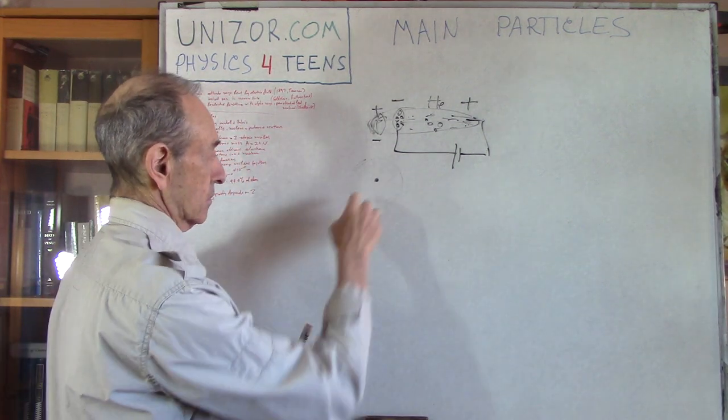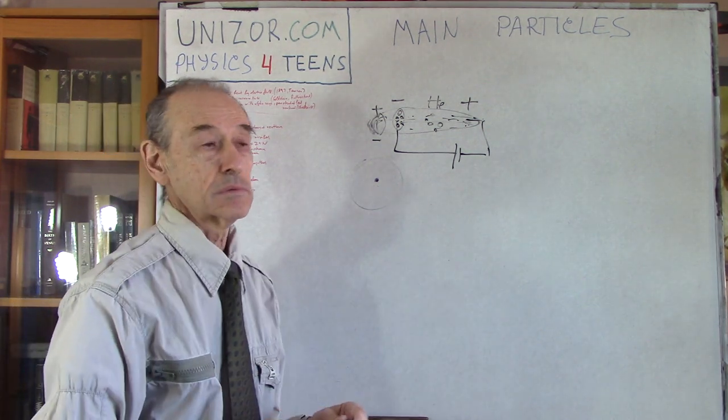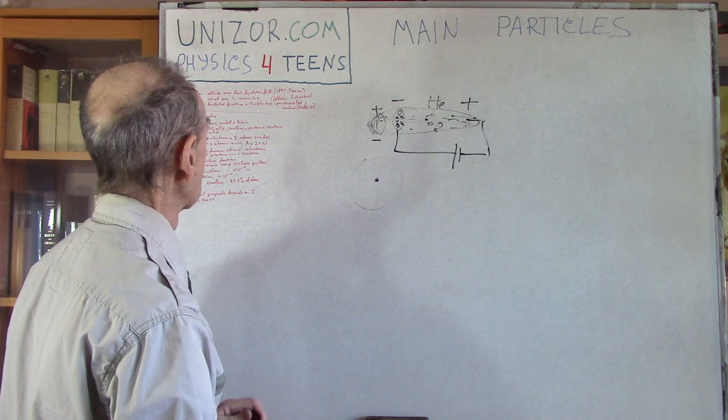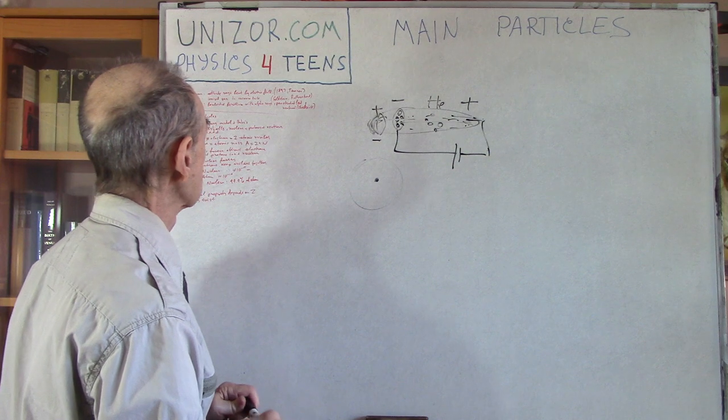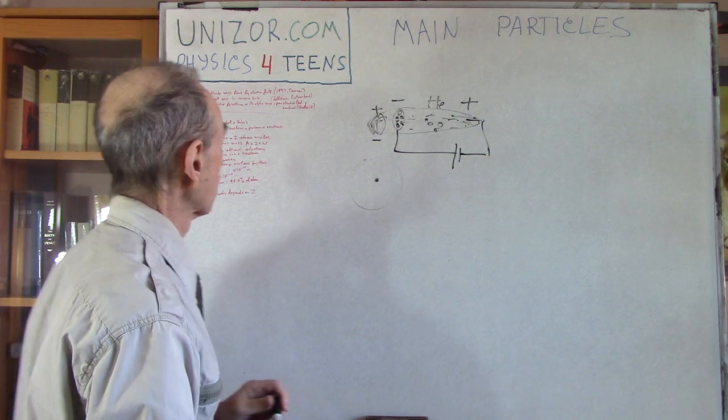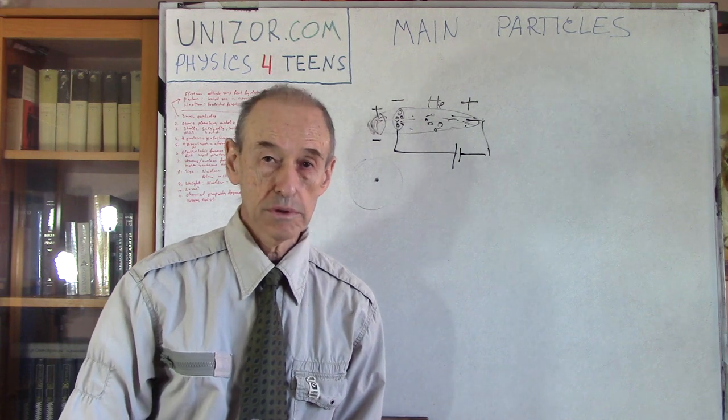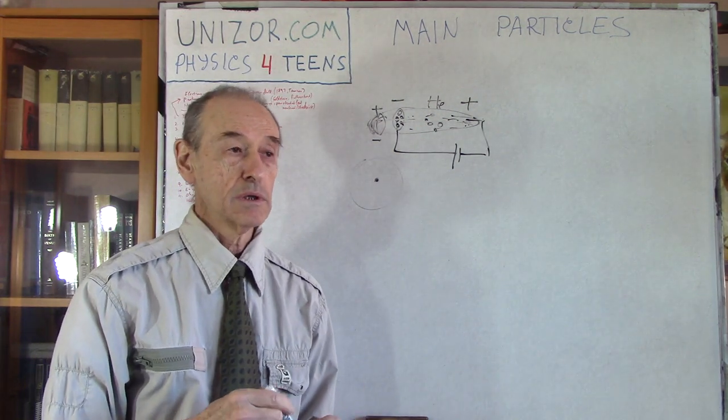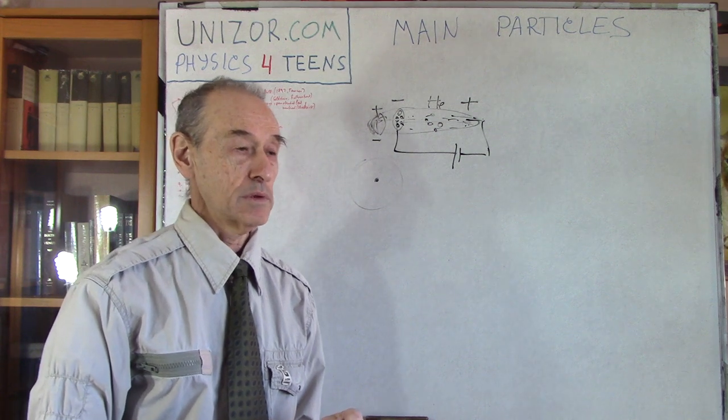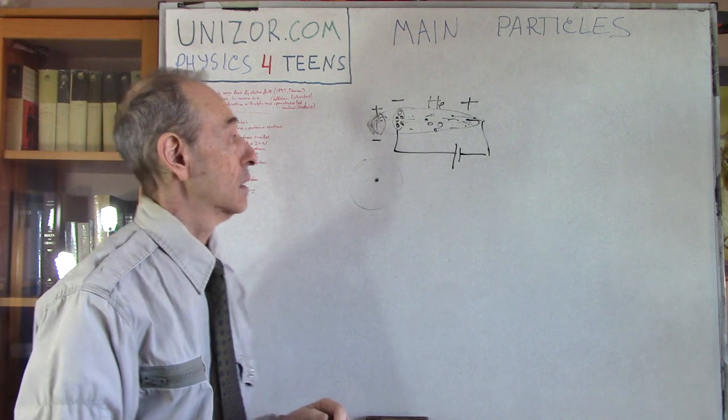Rutherford's experiments proved that the positive side which is nucleus, and the atom is practically empty because he was experimenting with gold foil - we were talking about this before - and the particles went just through the atoms.